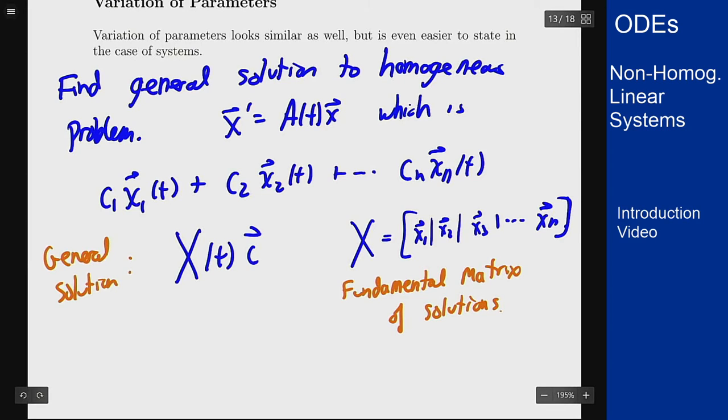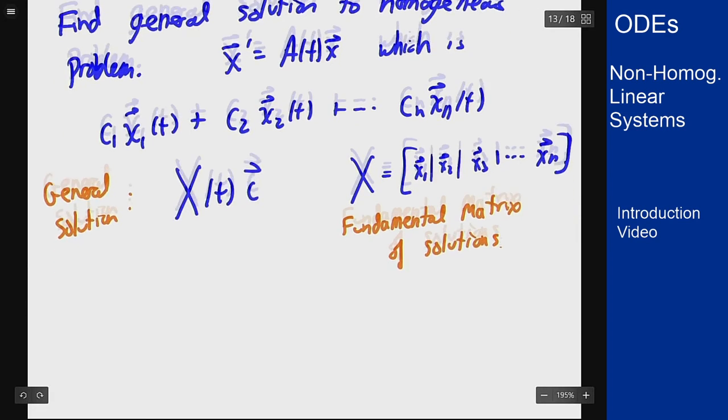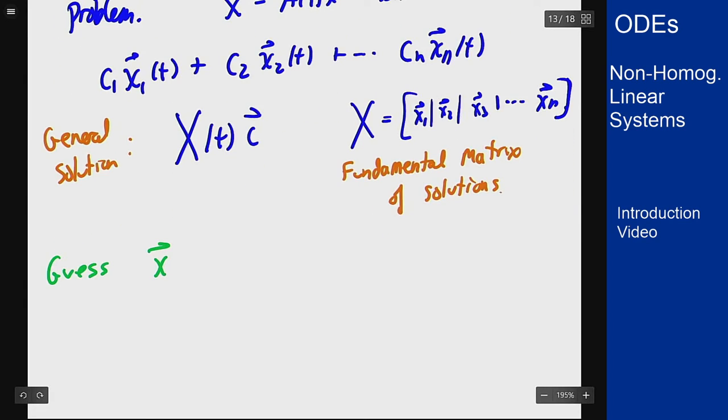Now the idea of variation of parameters is I know for any constant c this solves the homogeneous problem. So what I want to do is now vary that parameter, make it a function of t and see if I can make that solve the non-homogeneous problem. So we will guess our function x to be X(t) times an unknown vector u(t) and let's plug this in.